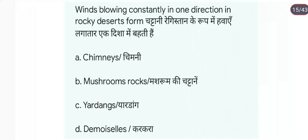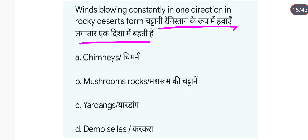Wind blowing constantly in one direction in a rocky desert forms yardangs। चट्टानी रेगिस्तान में जब हवाएं लगातार एक दिशा में बहती हैं तो yardangs बनते हैं।